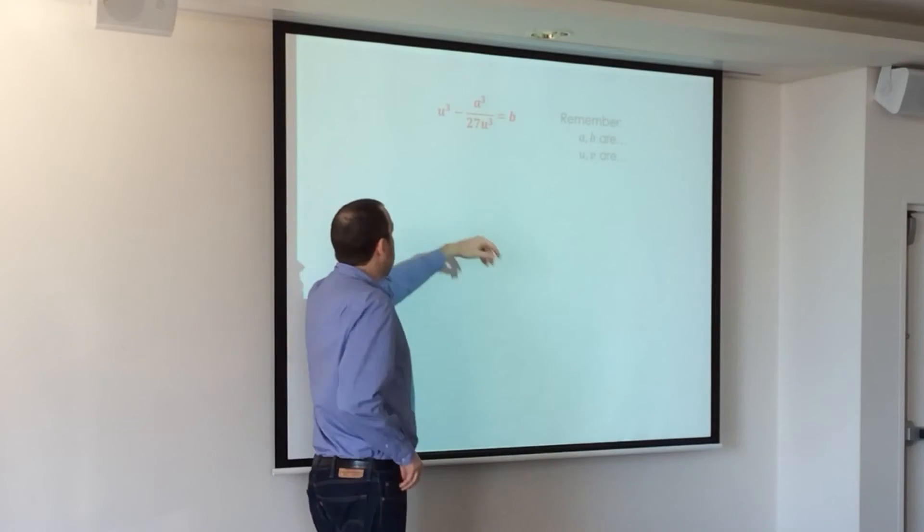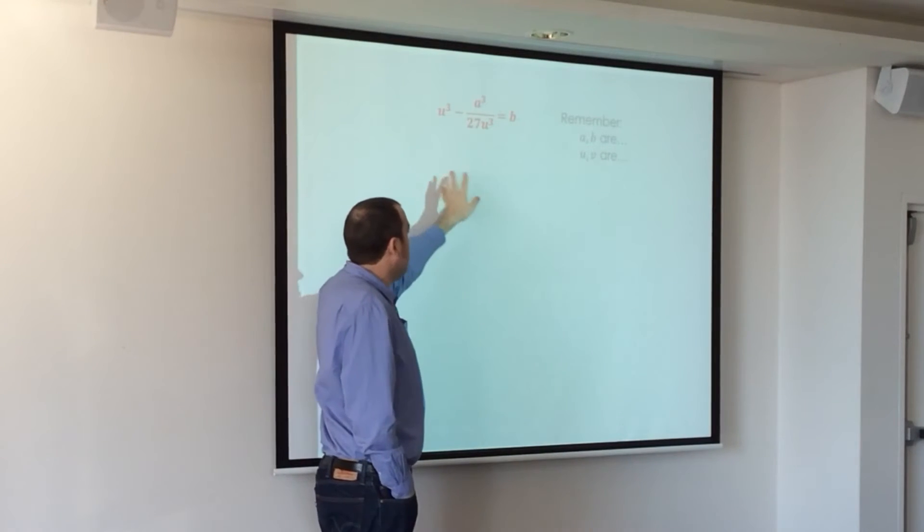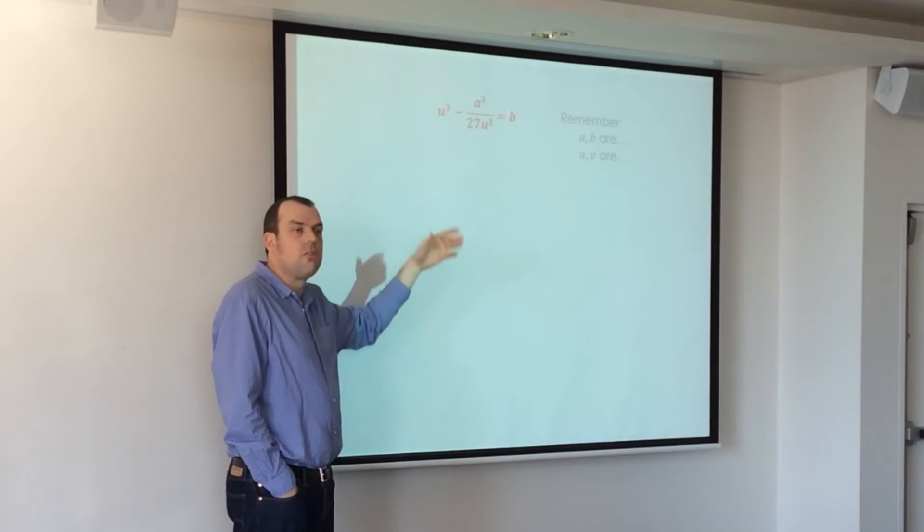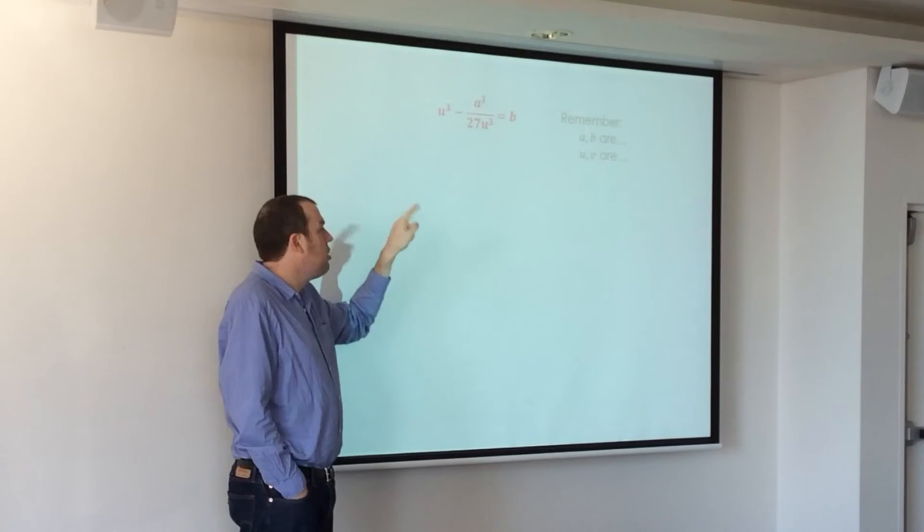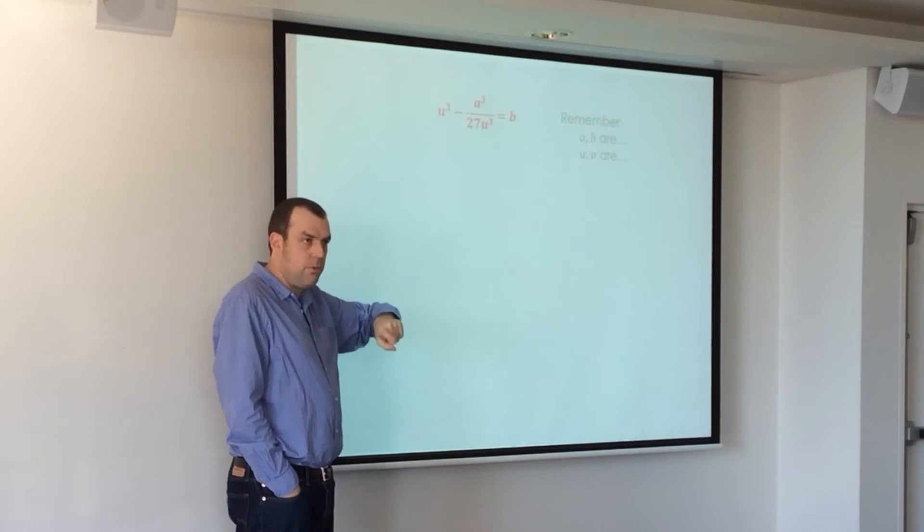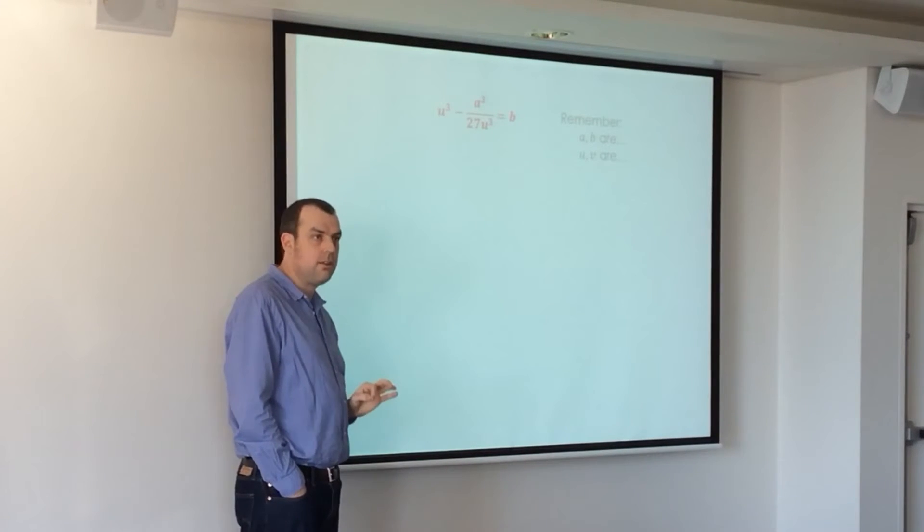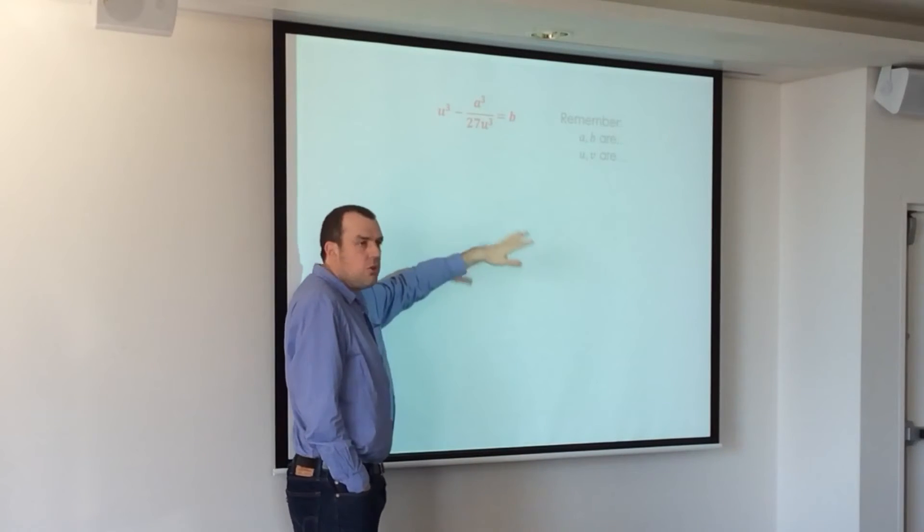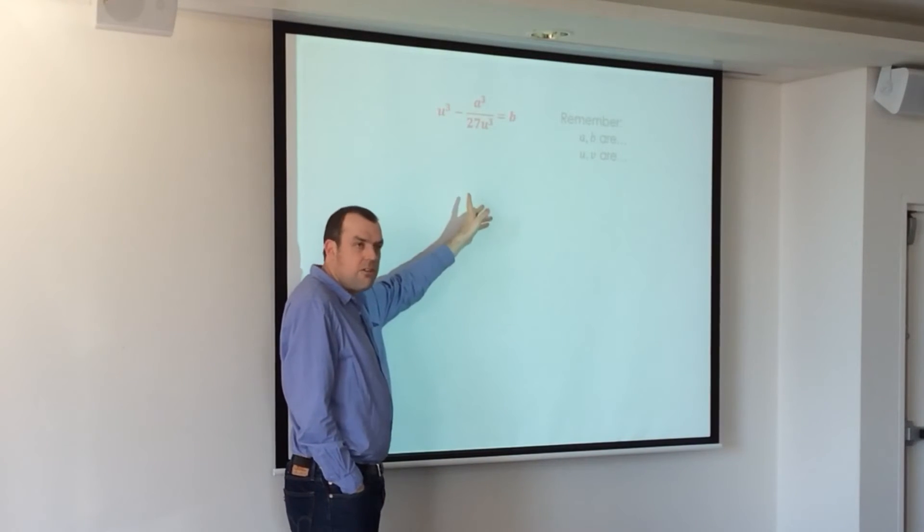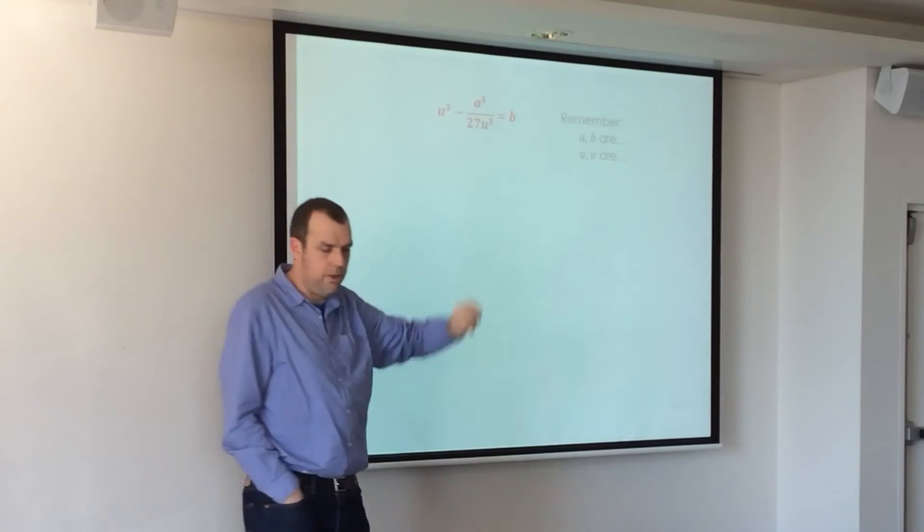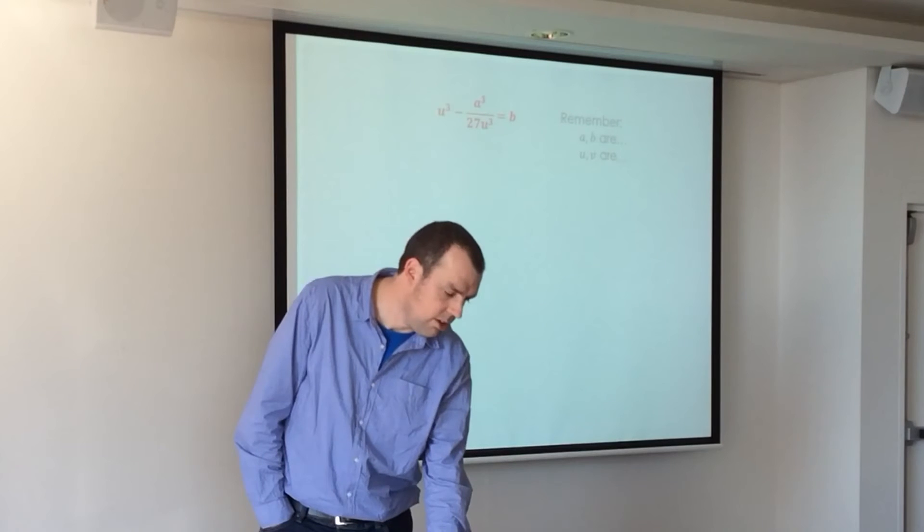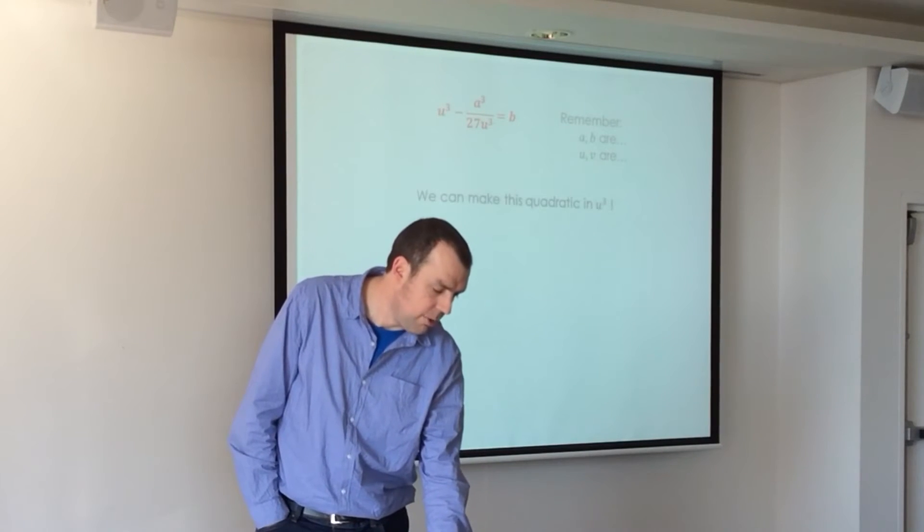It's good to get our bearings here. Not too many numbers here to hang our hat on. So a and b are constants from the equation. U and v are variables, because x was equal to u plus v. So we want to solve this for u or v. Well, there's no v, so we want to solve it for u. So solving it for u, well, let's get rid of that fraction, and we can make a quadratic.